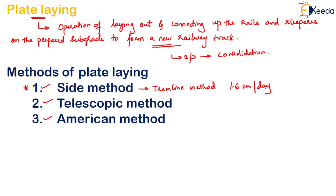The American method is called so because it was first used in America. In this method, a certain length of track is assembled in the workshop itself, then carried out by special track-laying machines and put into place. This method is very economical because labor requirement is very low. However, it is not much exclusively used in India.